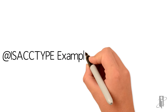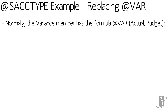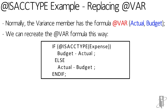Here's the best example I could come up with. The variance member normally has a formula called atvar — just atvar actual minus budget. The way that formula works is it does actual minus budget if it's a non-expense tagged account, and budget minus actual if the account is tagged as an expense.